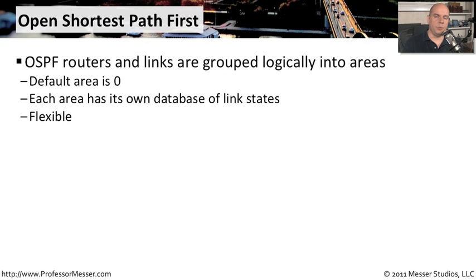In OSPF, we group together different parts of the network and those routers into something called areas. There is one default area called area zero, and if you're configuring or looking at an OSPF network, you will probably find area zero somewhere in there. Each area keeps its own database of link states, which makes it a very flexible environment to work with.